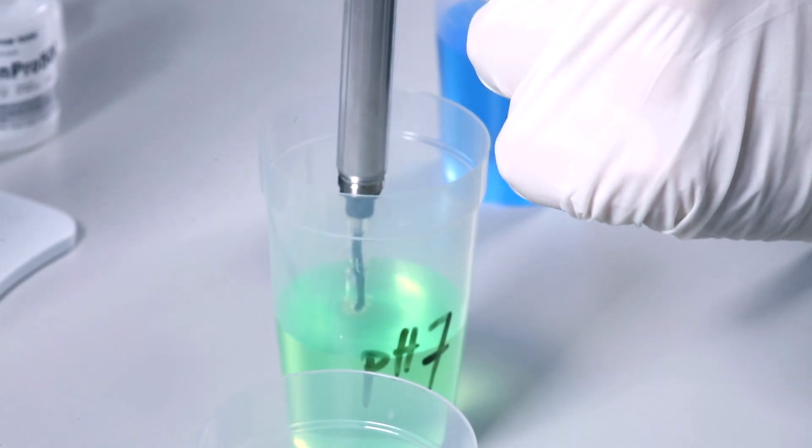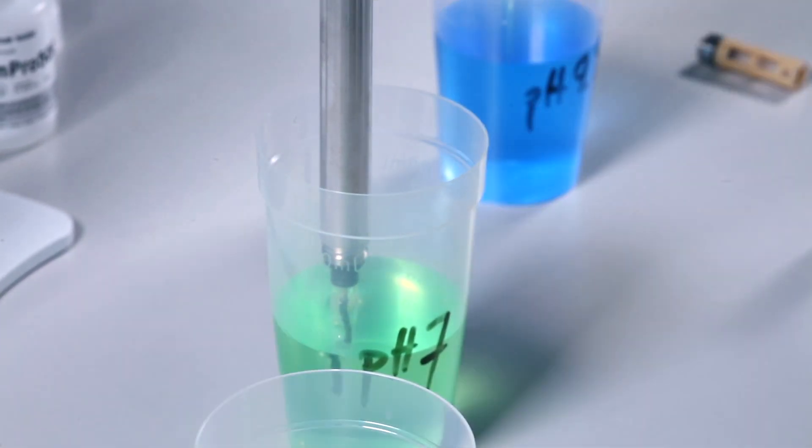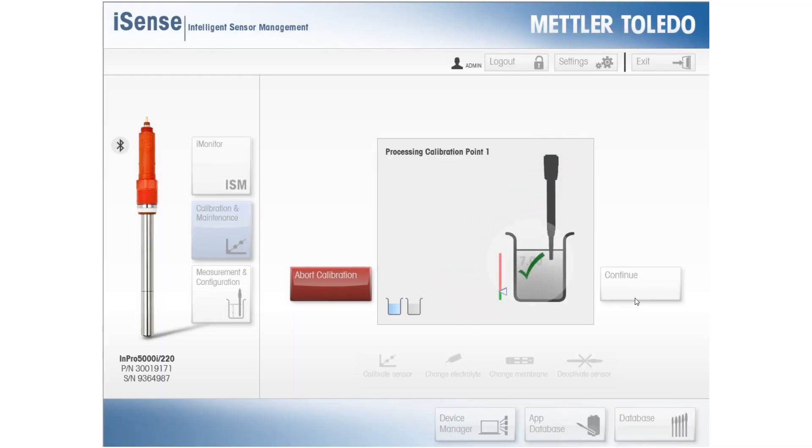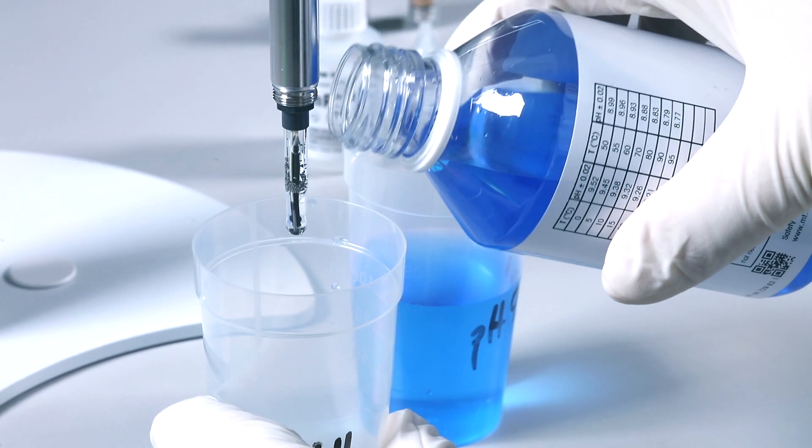Immerse the pH probe in the first buffer. Be careful not to touch the retainer nut during the procedure. iSense conveniently shows the whole calibration process in animated steps. After following all the steps, iSense shows you the calibration results.